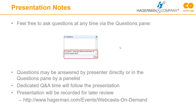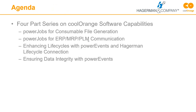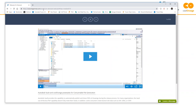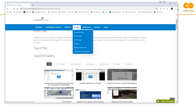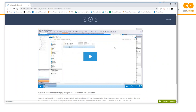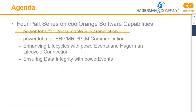Good morning everyone, this is Forrest. This morning we're going to be talking about Power Jobs for ERP, MRP, and PLM communication. This is the second webcast in a series of four about products from Cool Orange. The first webcast on consumable file generation was last week and is available at haggerman.com under webcast on demand. Today's focus will cover using Power Jobs for generating PDFs, STEP files, etc.